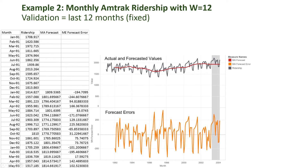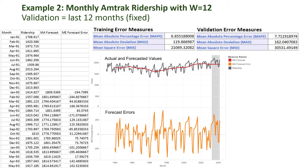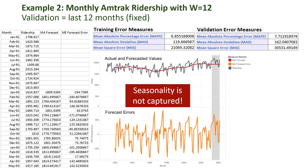Let's look at another example — a monthly series of ridership on Amtrak trains. Our validation period here was 12 months, and like the previous example, it's fixed — not a roll-forward application. Here we use a window of width 12 months, computing the moving average by averaging the most recent 12 values of ridership. For example, our first forecast is 1,809 thousands of passengers, and the associated forecast error is negative 194.7, indicating an over-forecast of almost 200,000 passengers. From the performance charts, we again see that trend and seasonality are not captured. We conclude that the moving average forecaster is missing two main patterns in the data: seasonality and trend.